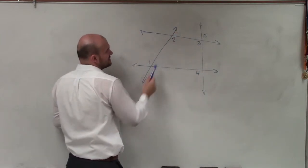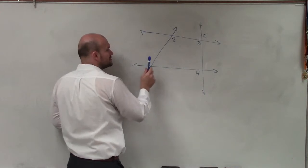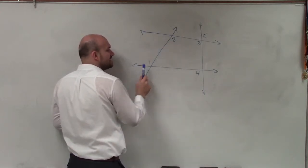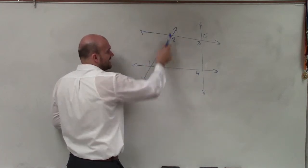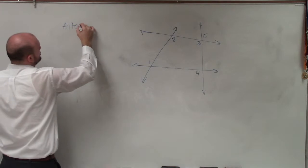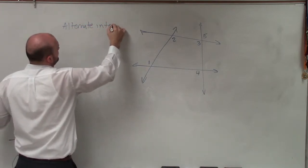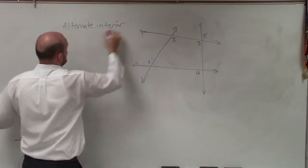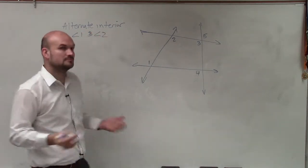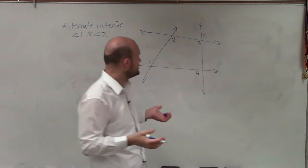Let's look at these two lines and then this transversal. What you can see is between these two lines and this transversal, I have a relationship between one and two. They are both inside of these two lines, as well as they're on alternating sides of this transversal. Therefore, we can say alternate interior are going to be angle one and angle two. Those are alternate interior angles.